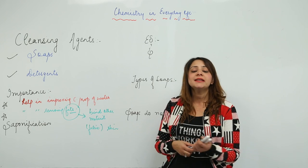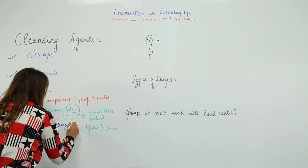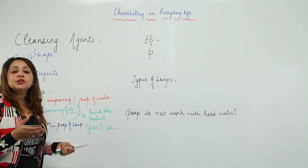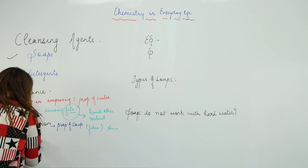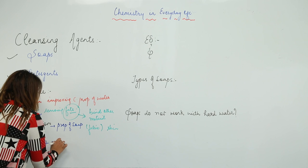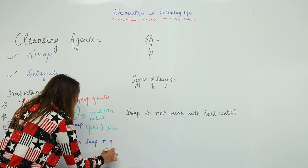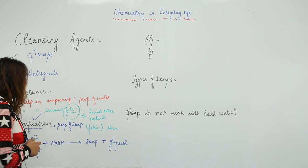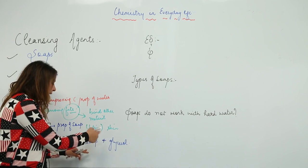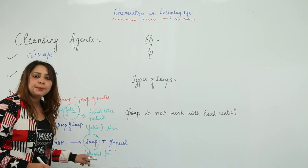First we are going to start with the detailed study of soap — specifically, how we make soap. The process by which soap is made is given a special name: saponification. Saponification is the process of formation of soap. The basic reaction involved is: vegetable oil or animal fat is reacted with sodium hydroxide (NaOH), and what we get is soap and glycerol. The soap formed appears in colloidal form in the mixture of soap and glycerol.